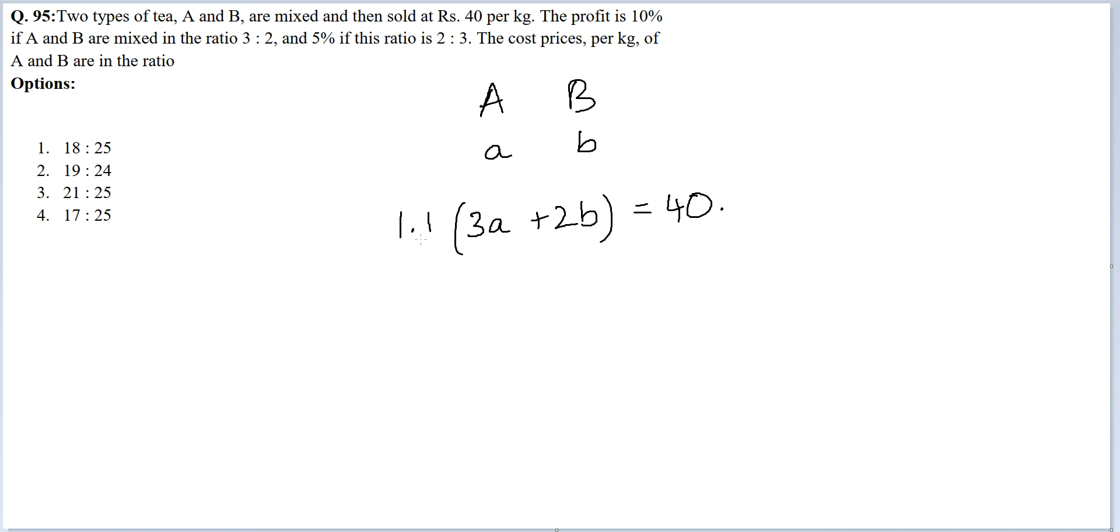In the second case they are mixed in the ratio 2:3, so 2a and 3b, and the profit is only 5%. So 1.05 times this should also equal 40 because the cost per kg is fixed in both cases.